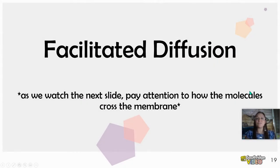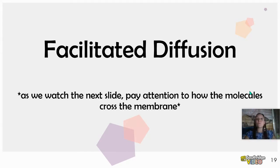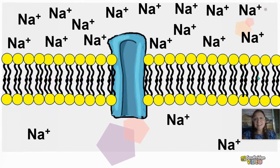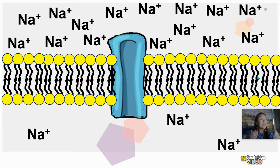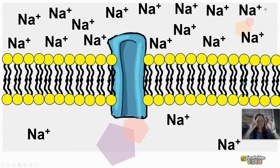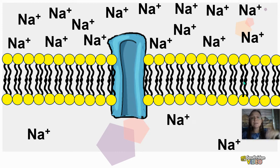Now let's look at another type of diffusion called facilitated diffusion. While oxygen was non-polar and could cross right through that lipid bilayer with no problem, that's not true for every kind of molecule — like ions or polar molecules. If a molecule is an ion or polar, it gets blocked by the non-polar fatty acid center. Those fatty acid tails repel ions or polar molecules.